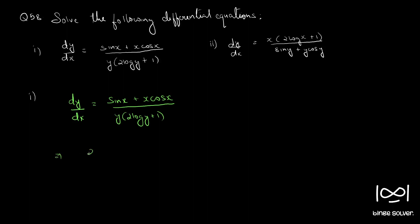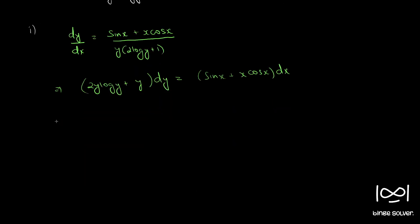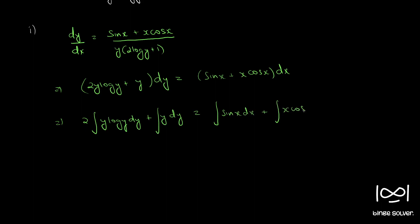So that becomes: (2y log y + y) dy = (sin x + x cos x) dx. Now we can integrate both sides: integral of 2y log y dy plus integral of y dy equals integral of sin x dx plus integral of x cos x dx, plus a constant c.